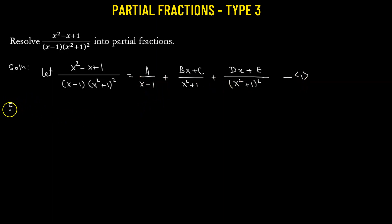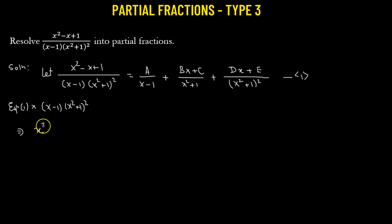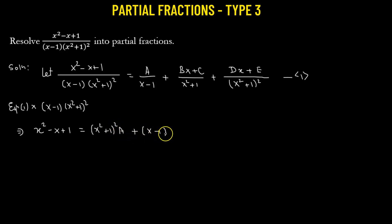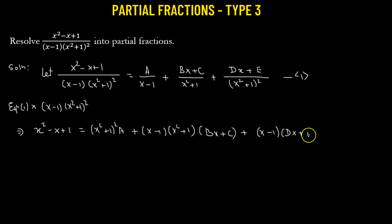Our goal is to take equation number one and multiply both sides by x minus 1 times x squared plus 1 whole squared. Once we do that, the left hand side becomes x squared minus x plus 1. On the right hand side we are left with: a times x squared plus 1 whole squared, plus x minus 1 times x squared plus 1 times bx plus c, plus x minus 1 times dx plus e. We then expand all terms on the right hand side and combine like terms.